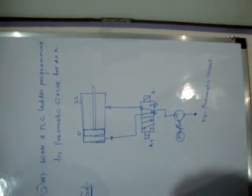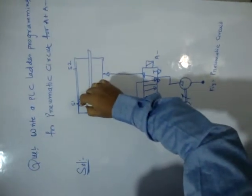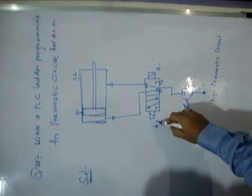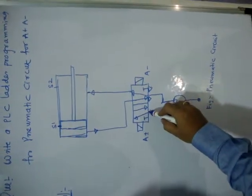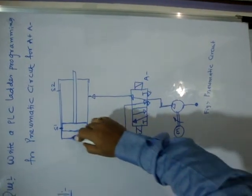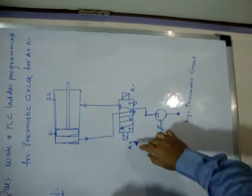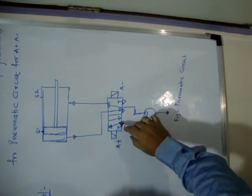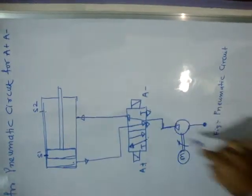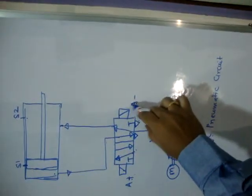This is the pneumatic circuit. Now I will draw the electric circuit — especially the PLC ladder — to run this pneumatic system through PLC, and I will draw the programming part. The logic is: when the piston is at S1, A-plus should turn ON. When A-plus is ON, air moves through this position to the piston side and the piston moves to the right side.